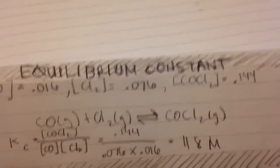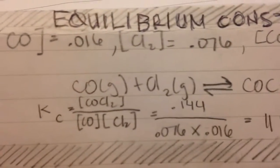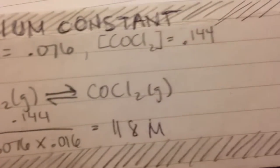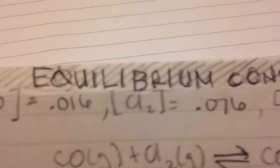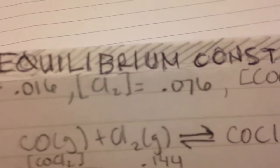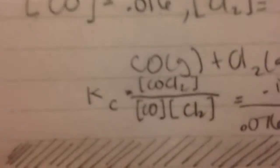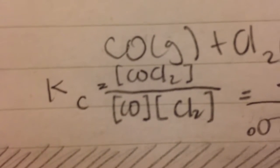In this problem we are looking for the equilibrium constant of the reaction Cl plus Cl2 giving us Cl3. We are given the concentration values for each of the reactants and the product. We are going to use the formula with products on top and reactants on the bottom.